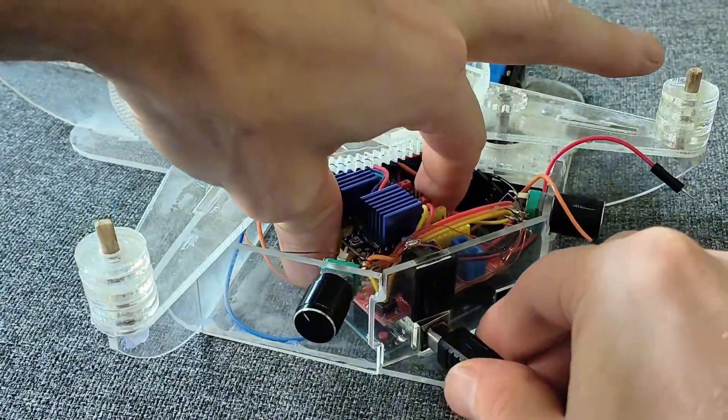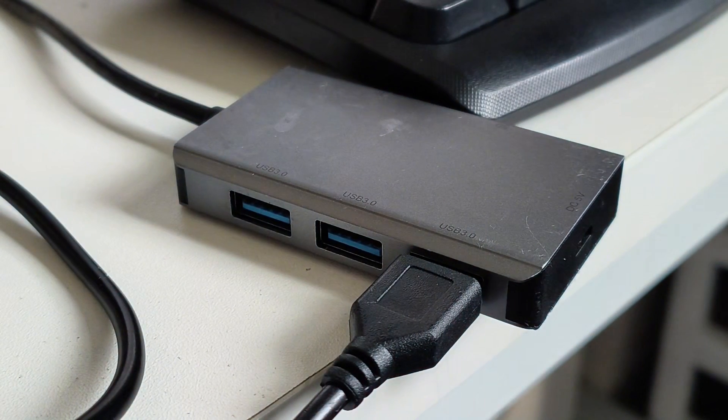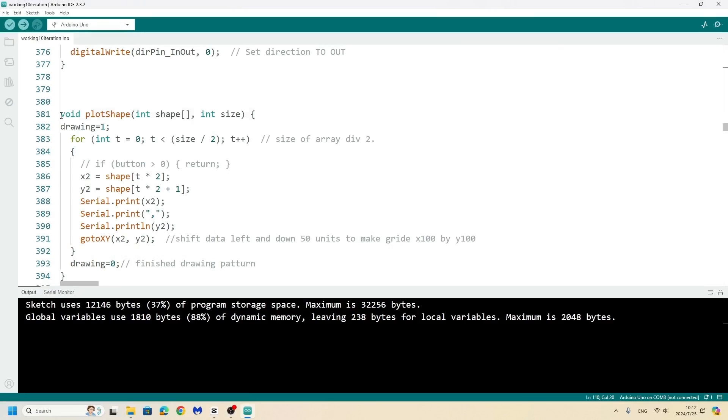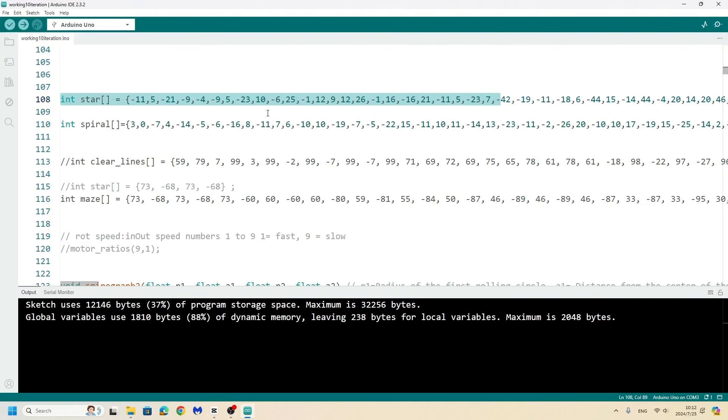I'm just using one Arduino board plugged into my computer. I made this function called plot shape that feeds in the points you want to graph, using an array with pairs of x-y coordinates.